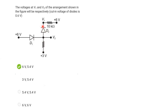So the D2 diode is reverse biased, acting as a broken path. Since D2 is reverse biased, no current flows through it. The current through the 10kΩ resistor is 0, and therefore the potential difference across the 10kΩ resistor is 0.